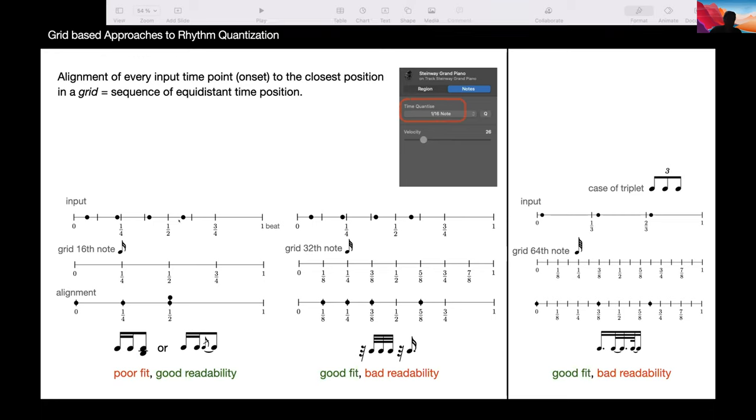For instance, here, assume that we have these inputs on the left. These are the notes, the starting point of notes. And we want to align this point to a grid corresponding to 16 notes, four points to align. We obtain this alignment and the corresponding notation is this. It's notation which is nice to read, but it's also not very precise. It's not closely related to the input.